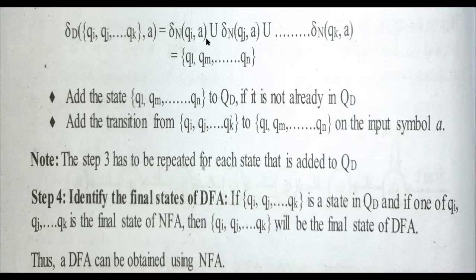So delta_N(qi, a) union delta_N(qj, a) union delta_N(qk, a). After getting the return values from these functions, we merge them. If the return value is {ql, qm, qn}, this will be the updated states of DFA.